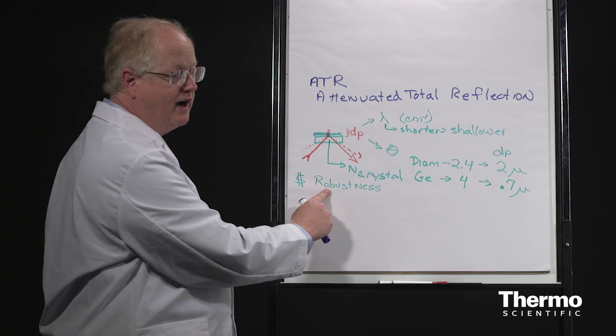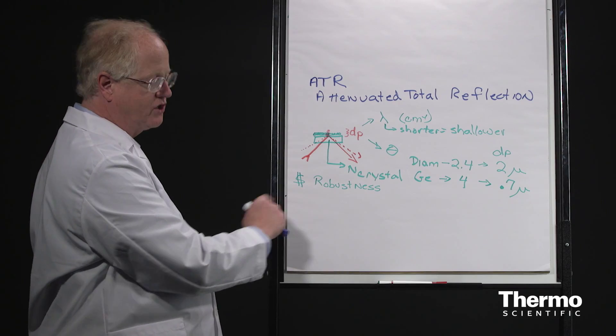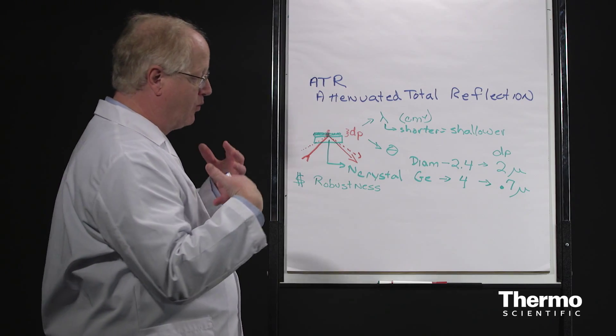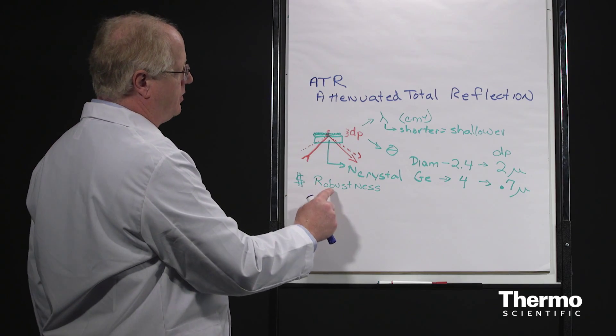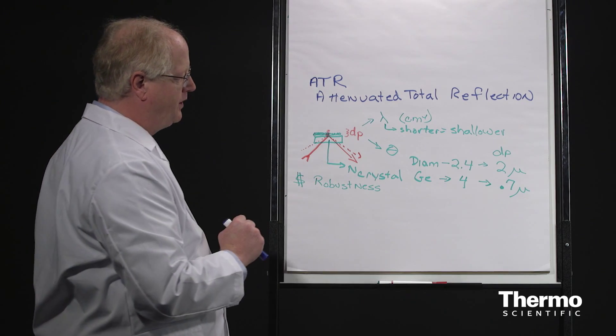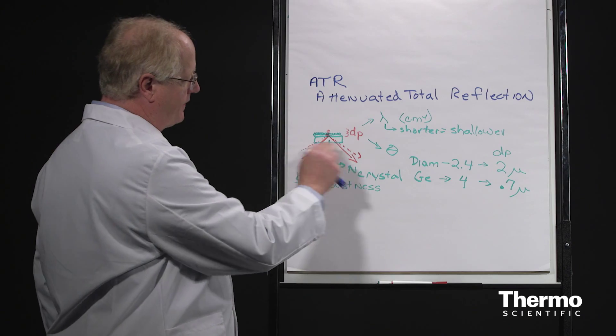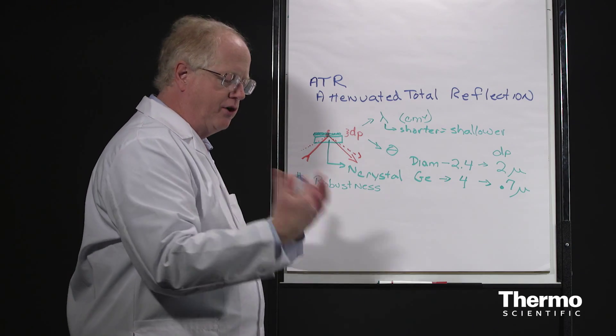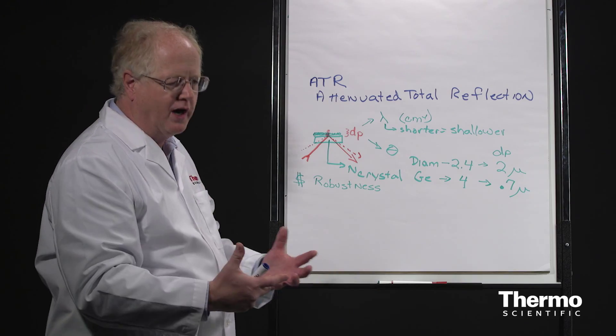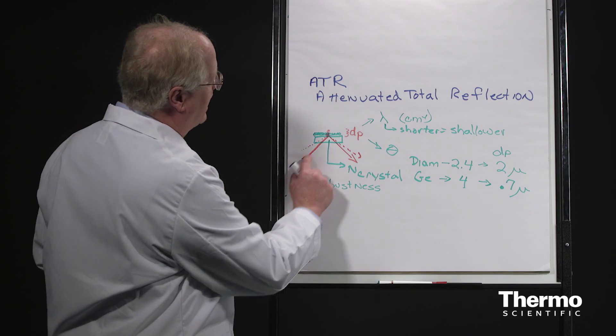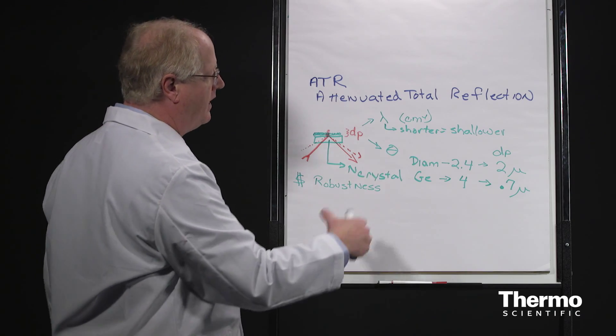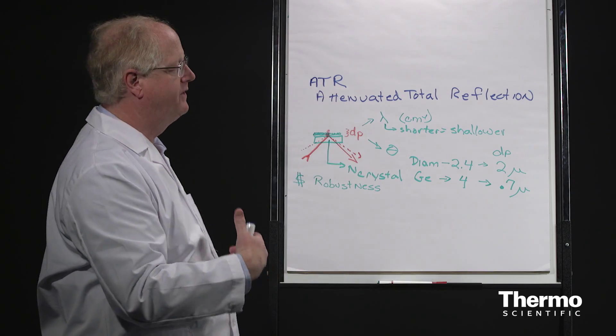The next thing is to consider what kind of samples you're going to be running. Are they soft samples? Are they hard samples? Are you going to be running multiple samples? So that gives you which one you need for the robustness. And if you're dealing with liquids and you're looking for different materials in those liquids that may be at low concentrations, you may want a higher angle so that you get a deeper penetration and therefore a better signal.